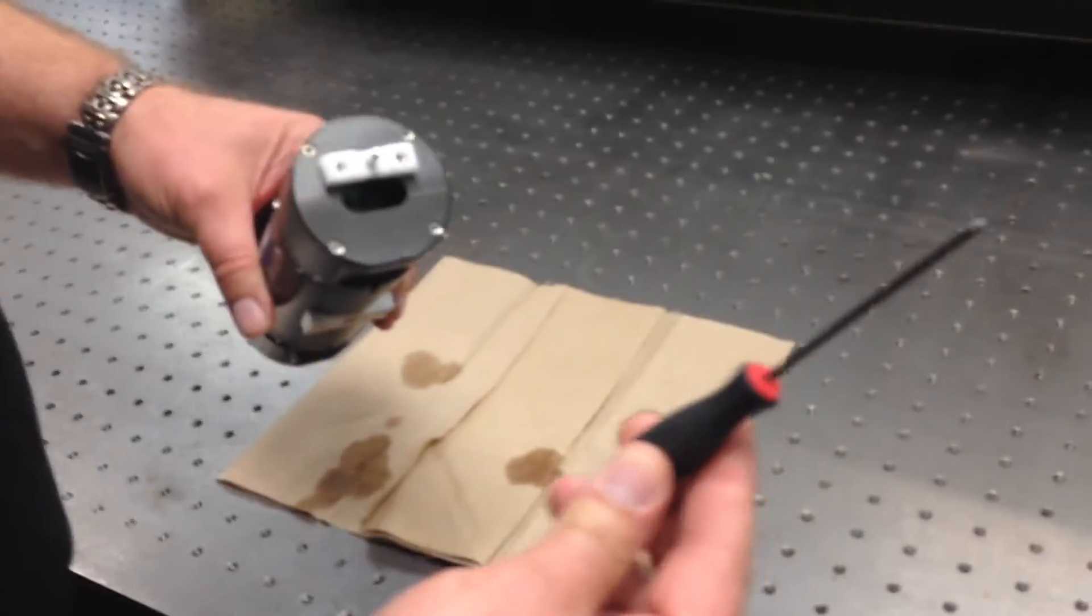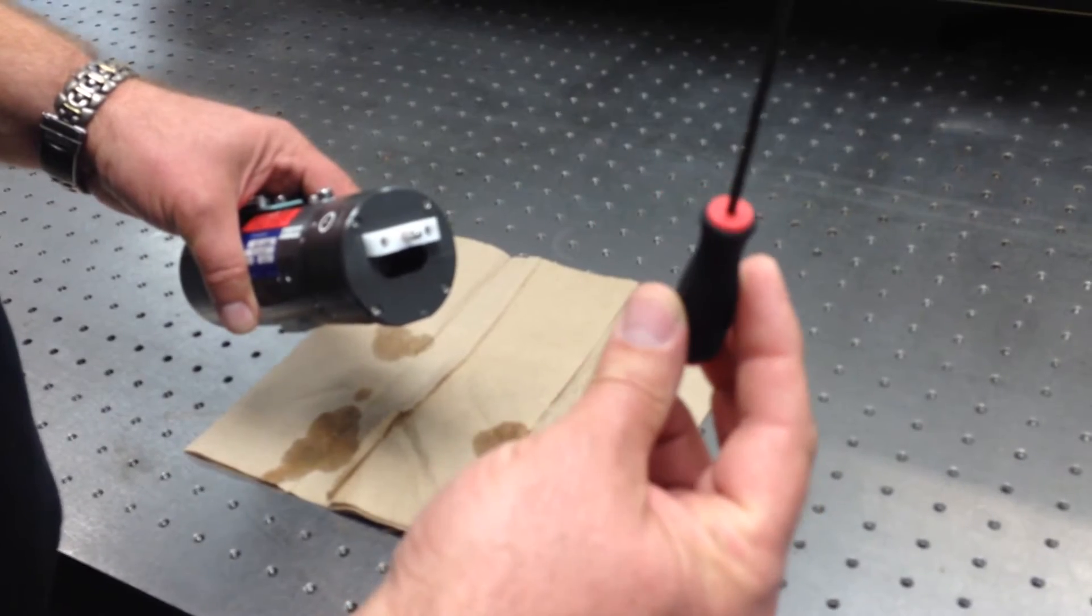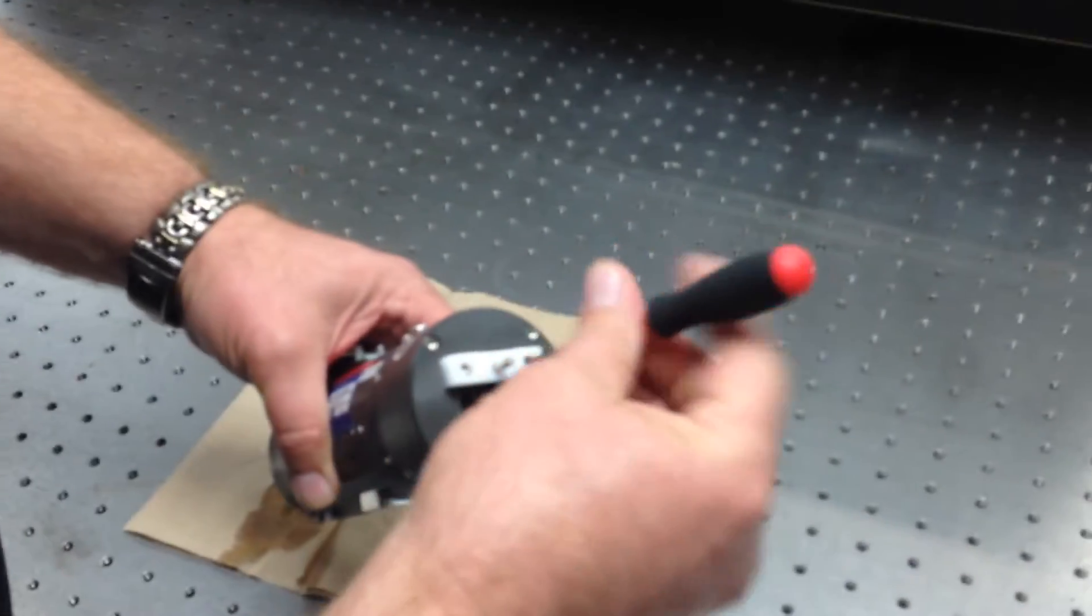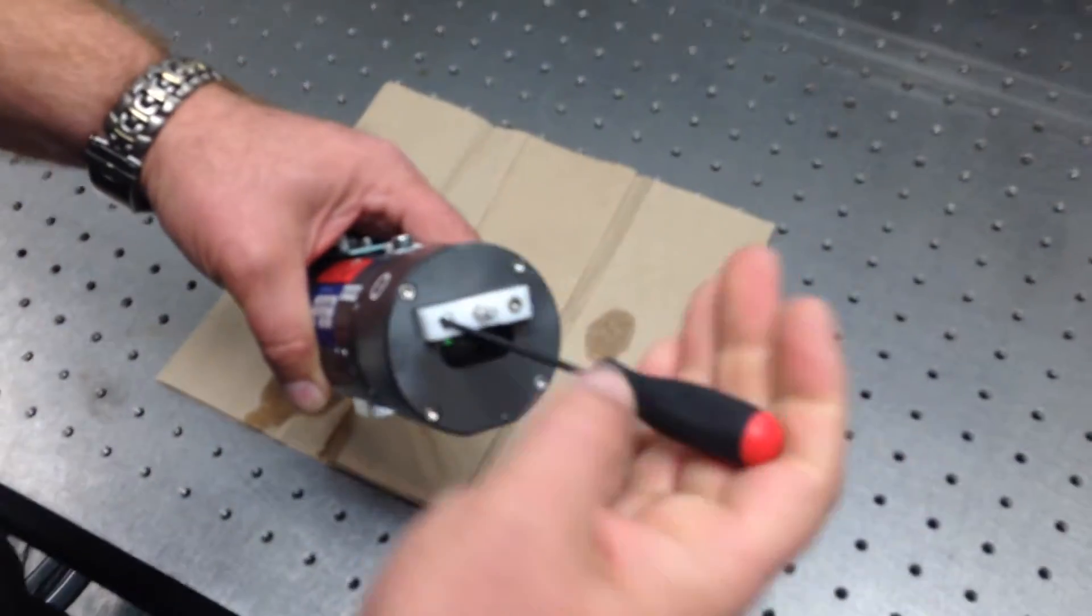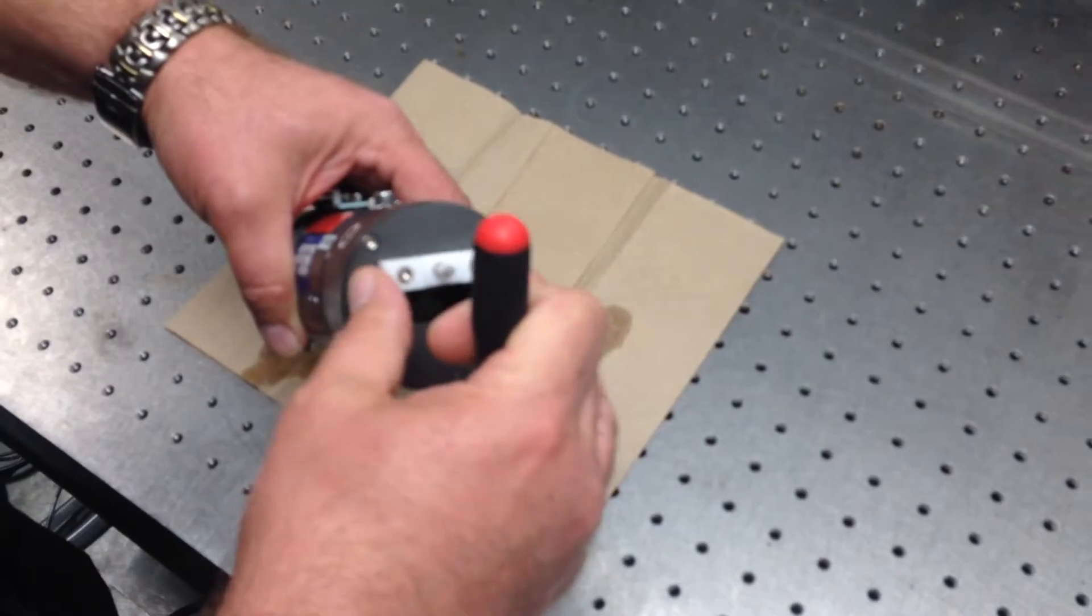So what we have here is a 2.5mm metric Allen and what we do is we want to loosen the clamps for the flash lamp on each side.